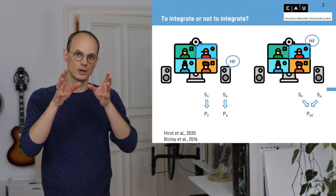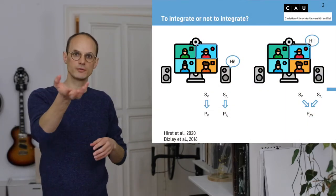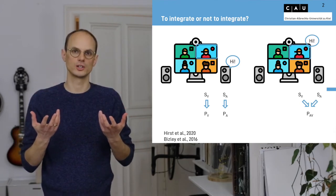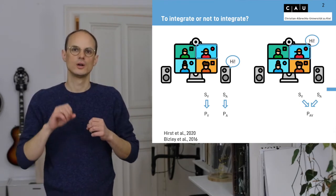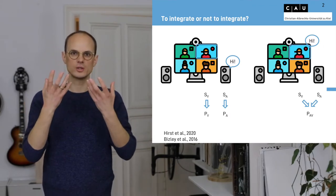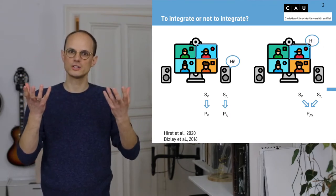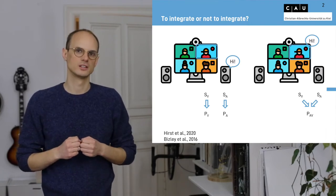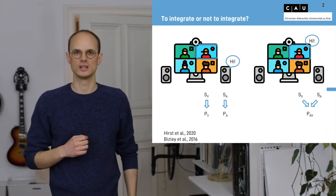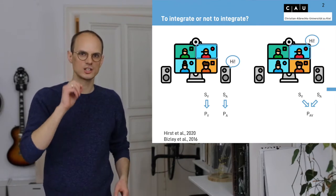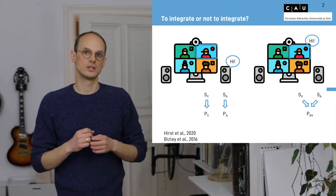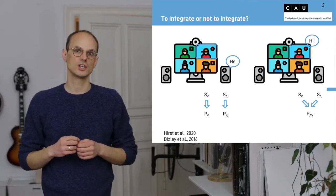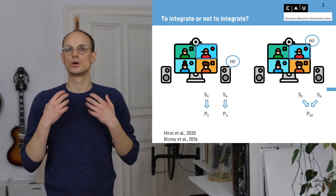In such a video call, we receive visual information and we receive auditory information. We need to decide which parts of the visual scene and which parts of the auditory scene we want to integrate into an audiovisual object. This is called multisensory integration. The question is whether this multisensory integration is an automatic process or whether it is influenced by cognitive processes.